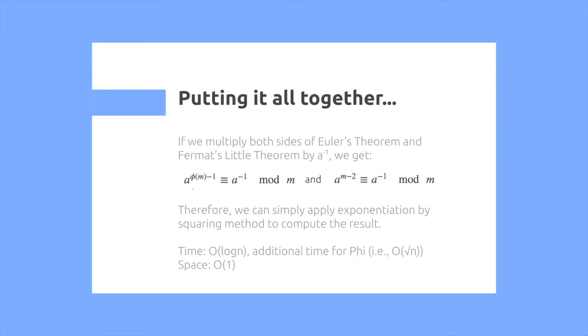Therefore, we can simply use our exponentiation by squaring method that I outlined in a previous video to compute the result. The time complexity of this is O of log n, where phi may take O of square root n using the factorization approach, and the space complexity is O of 1.